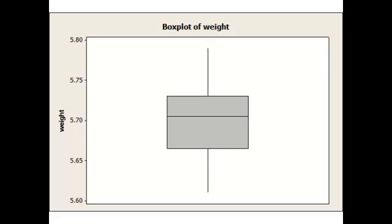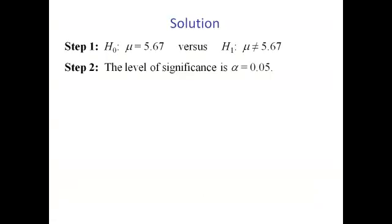In step two, we identify the significance level, which we said is alpha equals 0.05.